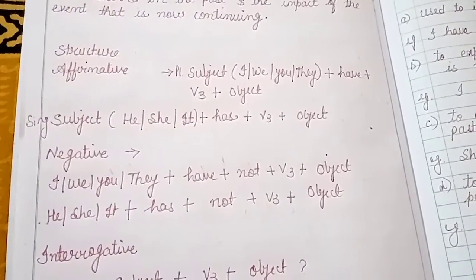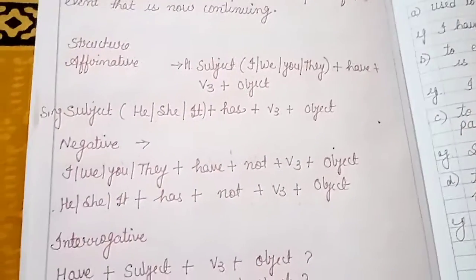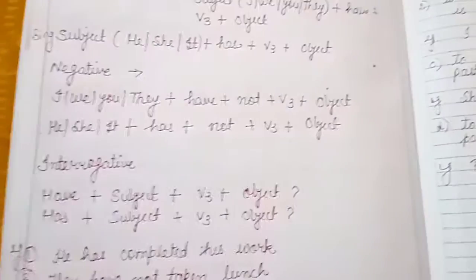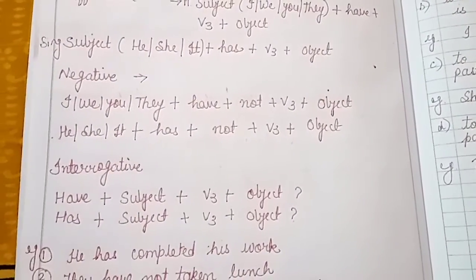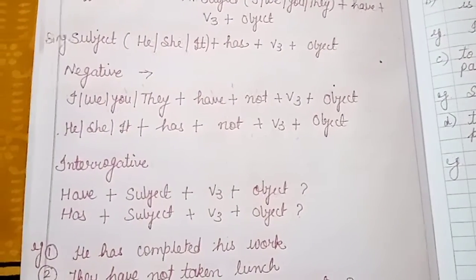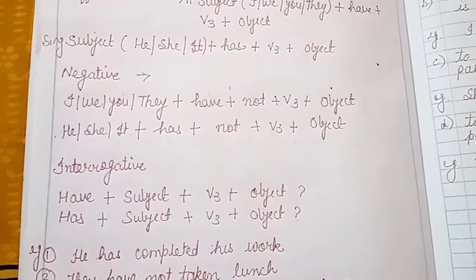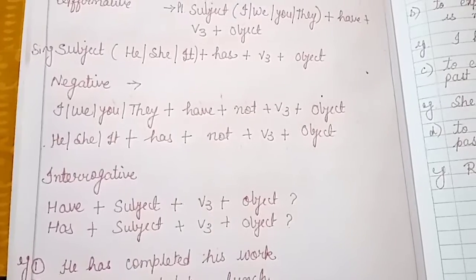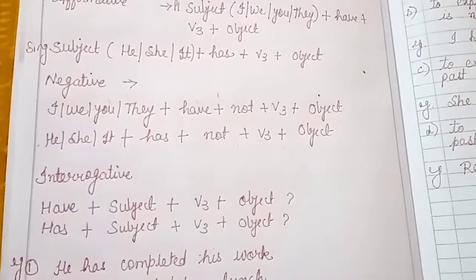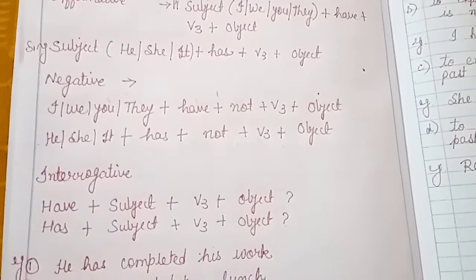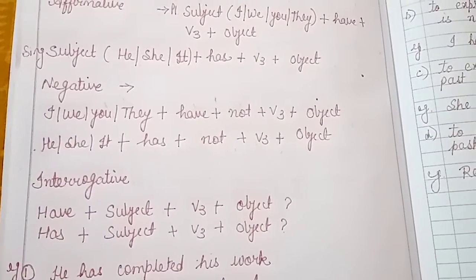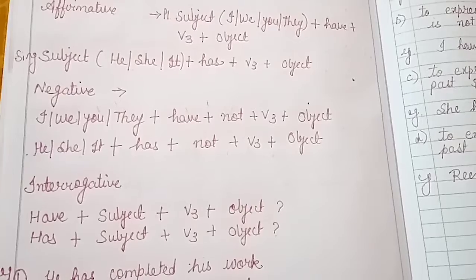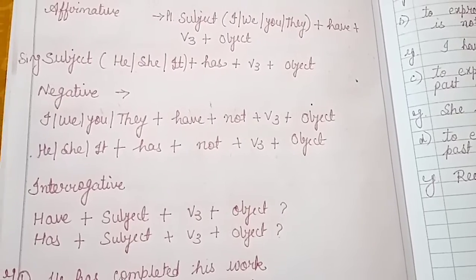For negative sentences, any plural subject — I, We, You, They — the structure is: subject plus 'have' plus 'not' plus verb third form plus object.